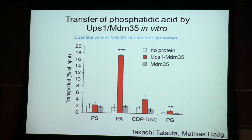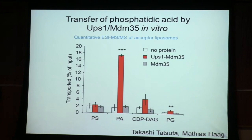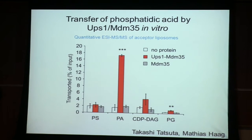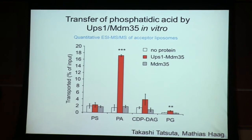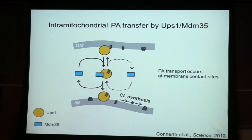When Takashi did this, the result was really striking. When he looked at the different types of phospholipids, only one phospholipid was efficiently transferred: phosphatidic acid. Together with other experiments, this showed that UPS1-MDM35 is able to transfer phosphatidic acid in vitro from one liposome to another. So UPS1-MDM35 appears to be a lipid transfer protein for phosphatidic acid.